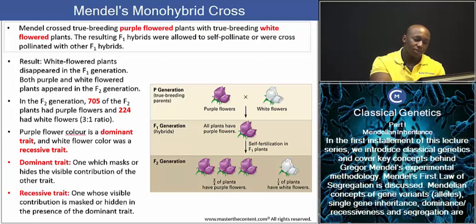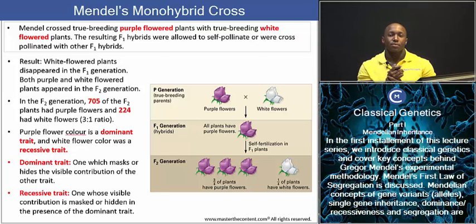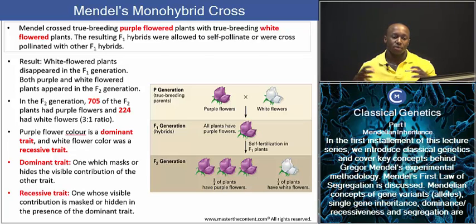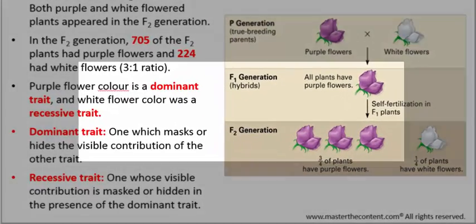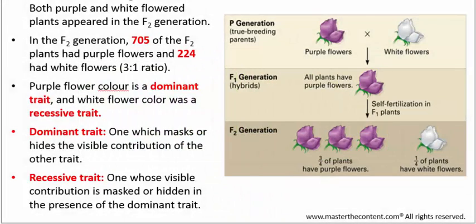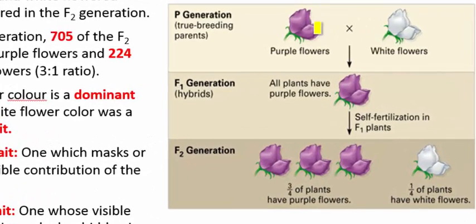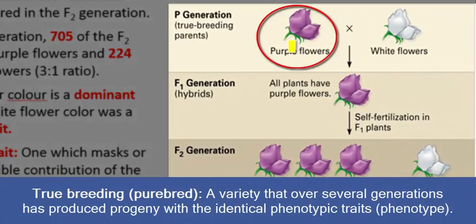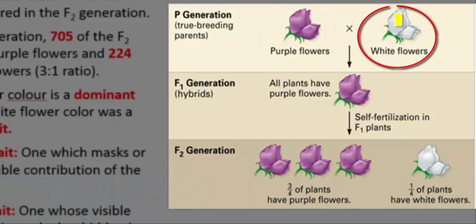What I want us to do is actually look at some of the crosses that Mendel did, delving further into figuring out what exactly his law of segregation was all about — this key principle. One of the traits that he selected to study was flower color, the color of the flowers of the garden pea. What he actually did is that he crossed true-breeding purple plants — pure lines — with true-breeding white-colored plants.